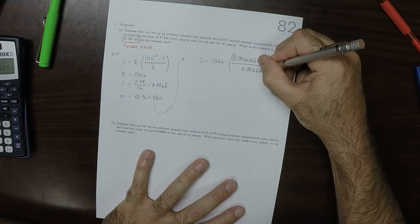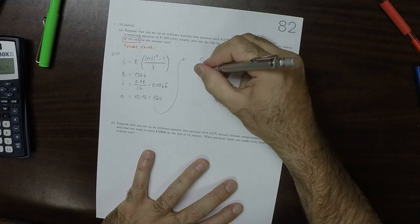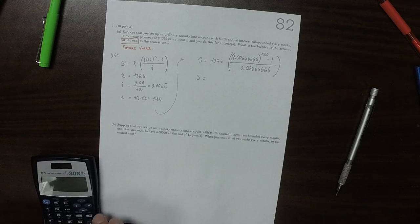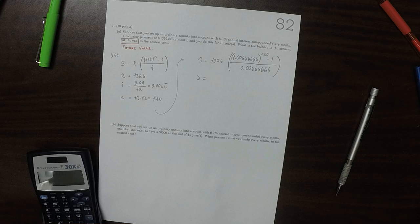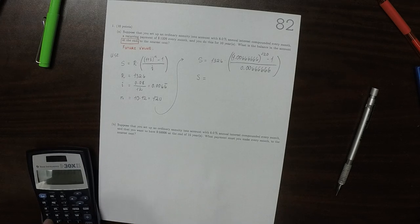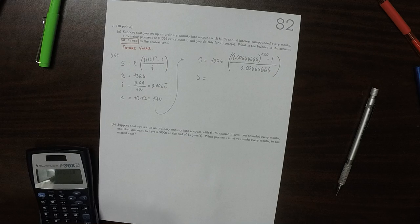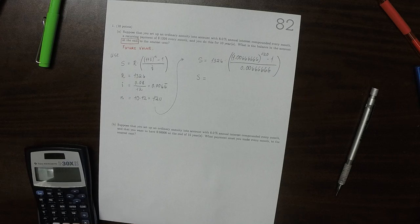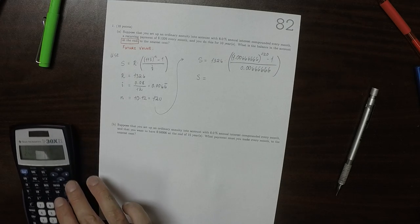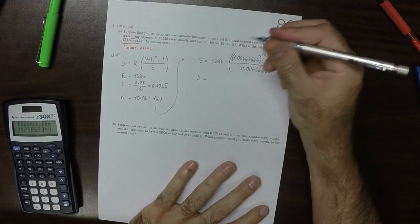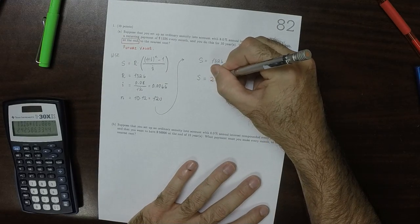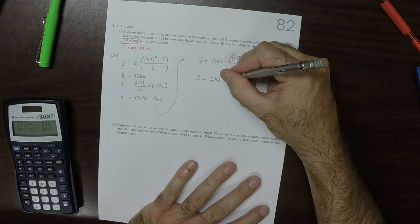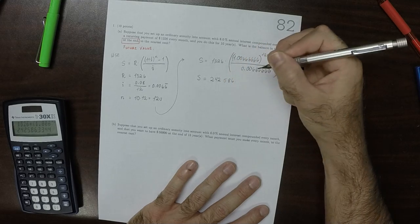So 1, 2, 3, 4, 5, 6. So typing that in. Okay, so that is $242,586.33.